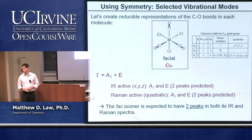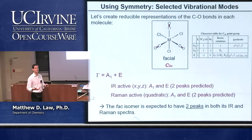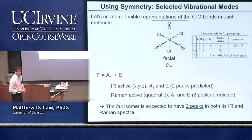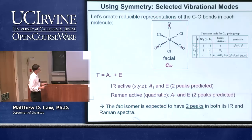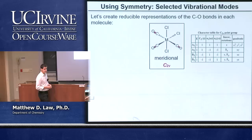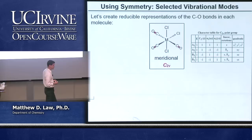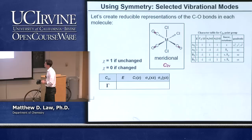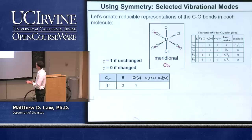The question is whether the MER isomer has a different number of infrared and Raman bands, allowing us to distinguish between them based on symmetry. The FAC isomer is C3V; the MER isomer is C2V. Here is the C2V character table. We do exactly the same thing: look at how the three different vectors transform under the different symmetry operations and generate a reducible representation.